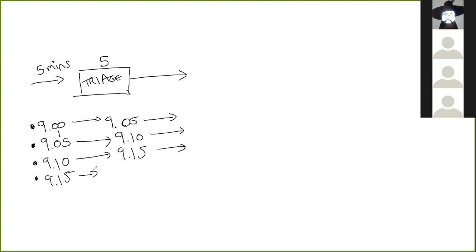This all sounds great, but we all know that's not realistic. If we were to model that, our system would say there is no queue, nobody ever waits. The triage nurse is constantly busy but never builds a backlog — it doesn't seem very realistic. And that's because the thing we haven't accounted for is variability. Patients may well arrive every five minutes on average and take five minutes to be triaged on average, but that doesn't mean all patients arrive on the dot and spend exactly five minutes with the triage nurse. So let's look at what would happen if we deal with this in terms of averages.